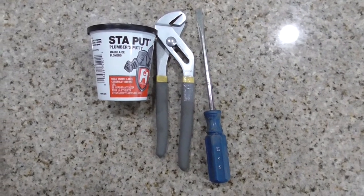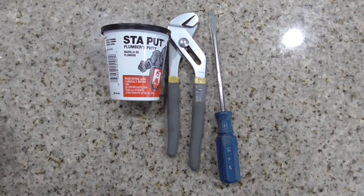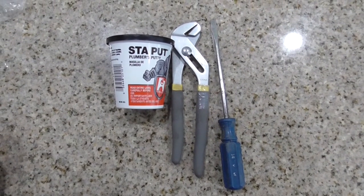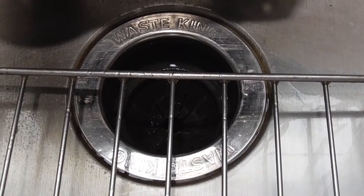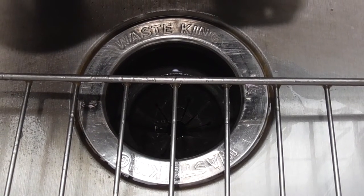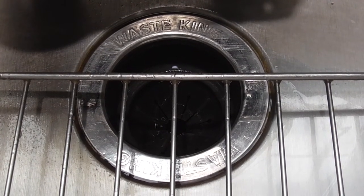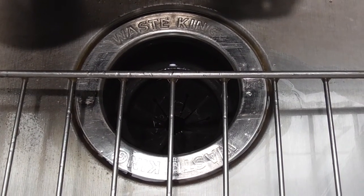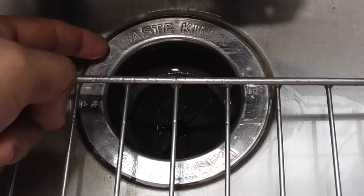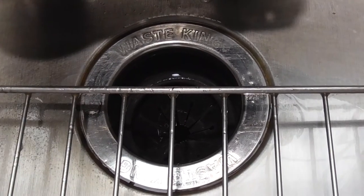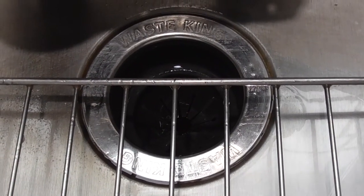Three things you need for this project: plumber's putty, channel lock, and screwdriver. I use plumber's putty right underneath the sink flange. You can use the rubber one they give you, but you cannot use both. Just make sure you use one and take the excess out. Use plumber's putty when you tighten your support ring.